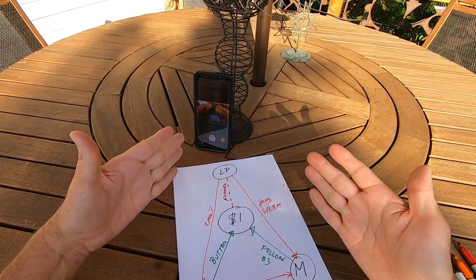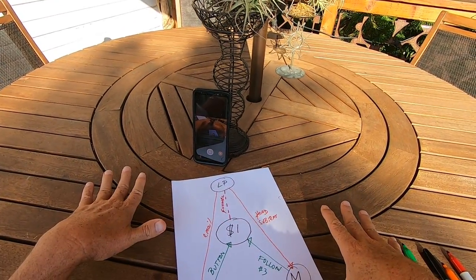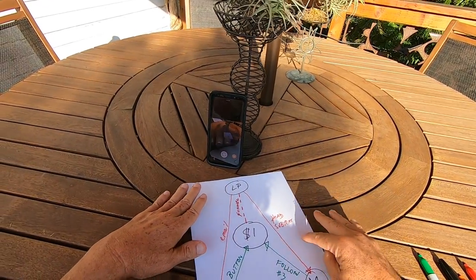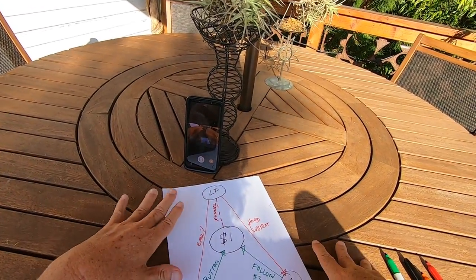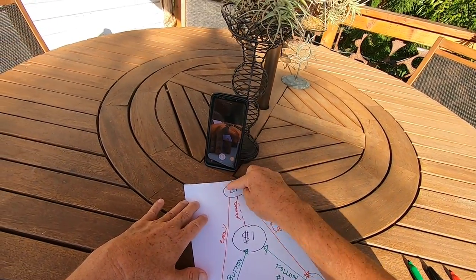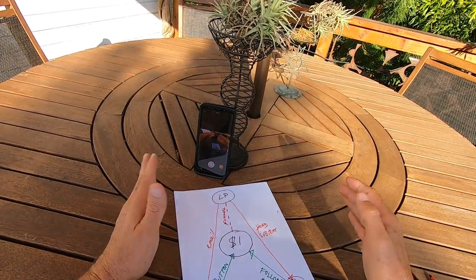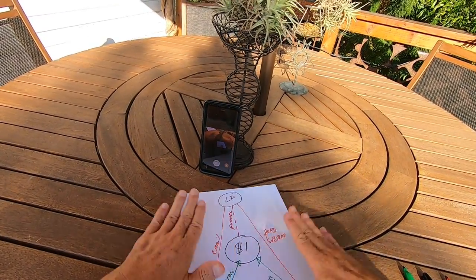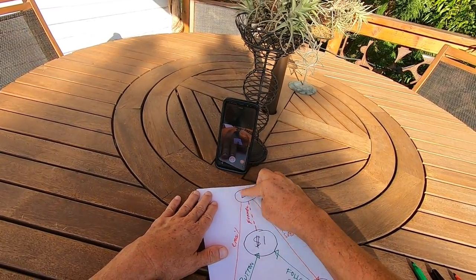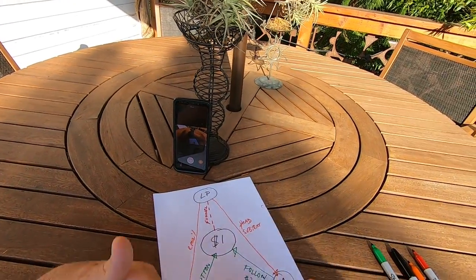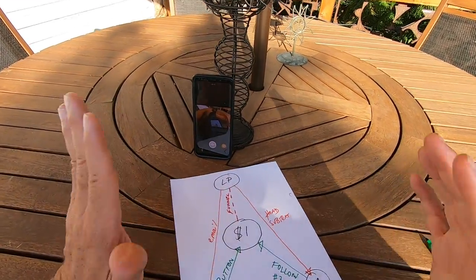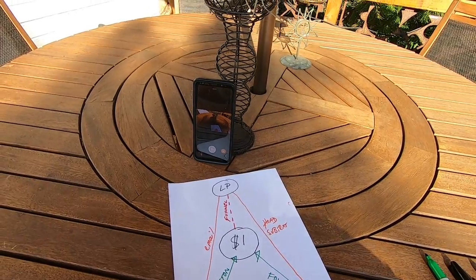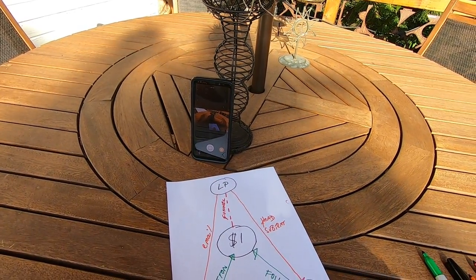So I hope you learned something from this. You can document this in any way you like. For example, you could break this down even further. Let's say you wanted to break down the landing page and its elements. You could grab a piece of paper like this and just focus on the landing page and break down the different elements. So I hope you found this interesting. Let's go back to the training.